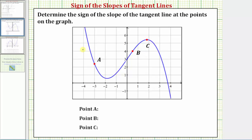So the tangent line at point a would look like this. The tangent line at point b would look like this. And the tangent line at point c would look like this.